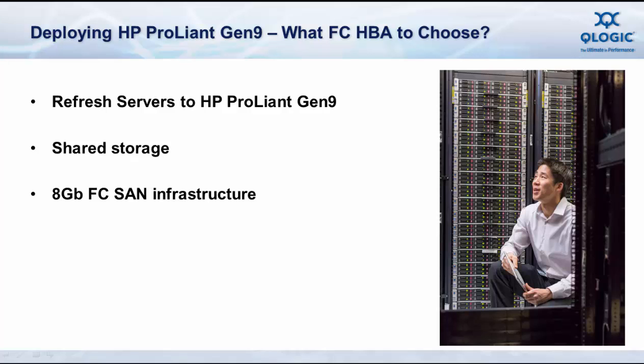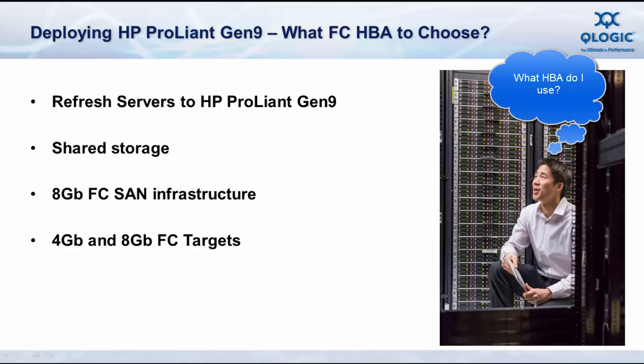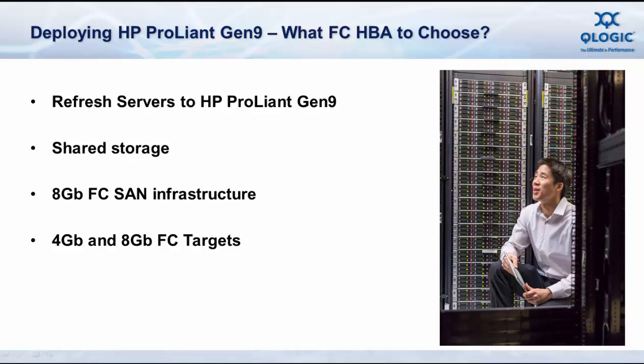The storage is a combination of both 4GB and 8GB Fibre Channel storage targets. So the question is, what kind of Fibre Channel adapters do we add to our Gen9 server configurations? The answer seems obvious since the SAN is an 8GB Fibre Channel SAN — then you should use 8GB Fibre Channel adapters, right? Well, let's see if there might not be a better option.